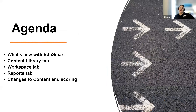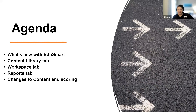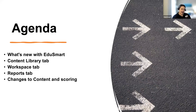To get us started, we are going to be talking about what's new with Edgesmart. We're going to cover the content library and how that has changed, our workspace tab and some new options available there, the reporting page where we have all our student data and how we've simplified that, and then there have been some slight changes to our content and scoring.